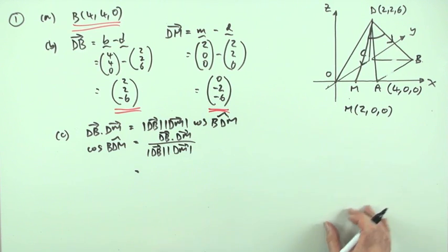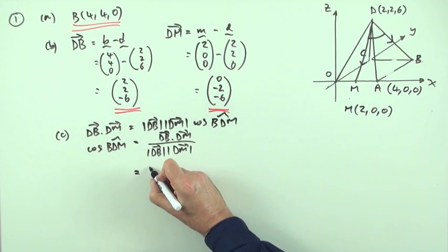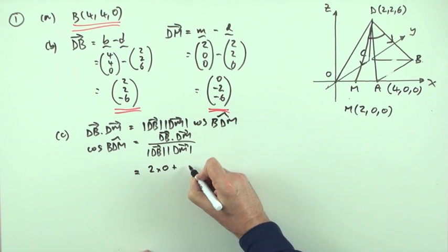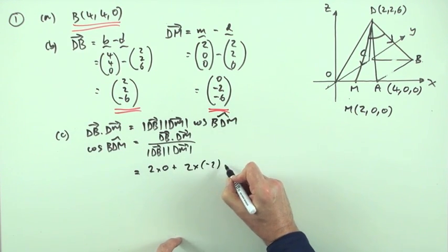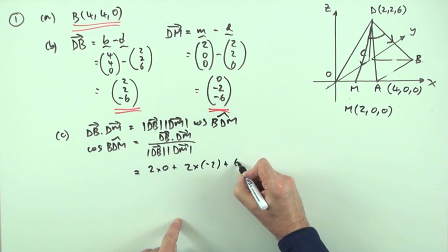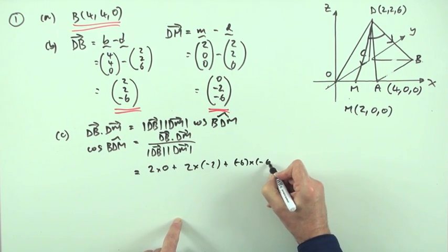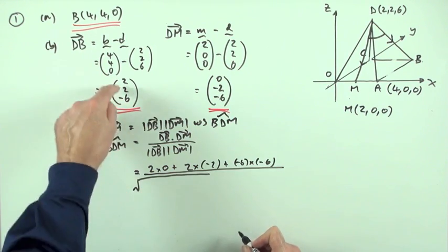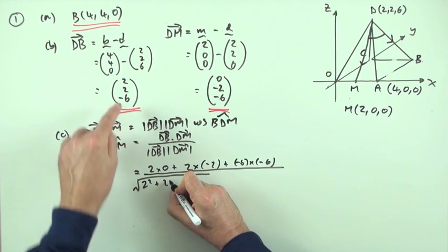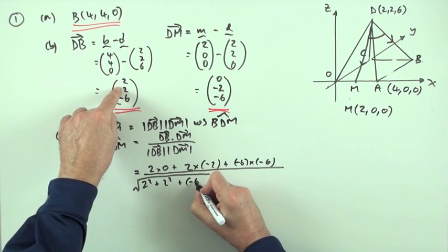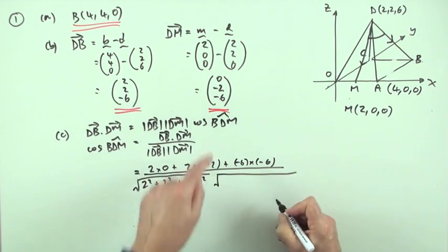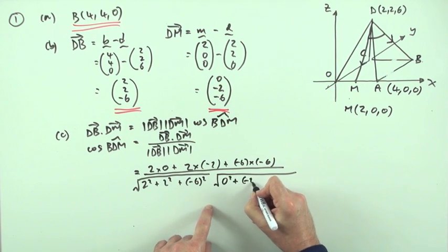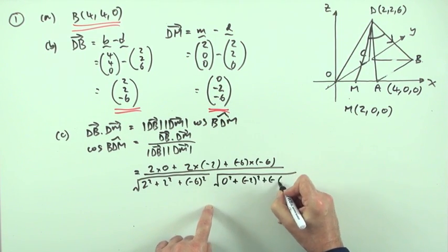So the cosine of BDM will be DB dot DM over the length of DB times the length of DM. Now you can work those three parts out separate if you liked, or you can just put them all down at once, which is what I think I'll do. DB dot DM, those two. So it'll be the X components, 2 times 0. The Y components, 2 times negative 2. The Z components, negative 6 times negative 6. All divided by the length, so that'll be the square root of the three components squared. 2 squared, plus 2 squared, plus negative 6 squared. Times the square root of 0 squared, plus negative 2 squared, plus negative 6 squared.